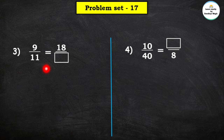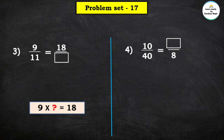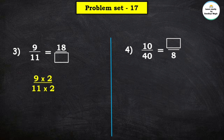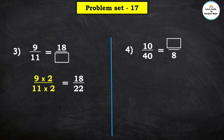Next example: 9 upon 11 equals blank upon 18. The numerator to find is based on the given numerator 9. Since 18 is bigger, we ask: 9 multiplied by which number equals 18? 9 times 2 is 18. So we multiply both numerator 9 and denominator 11 by 2: 9 twos are 18 and 11 twos are 22. The equivalent fraction of 9 upon 11 is 18 upon 22.